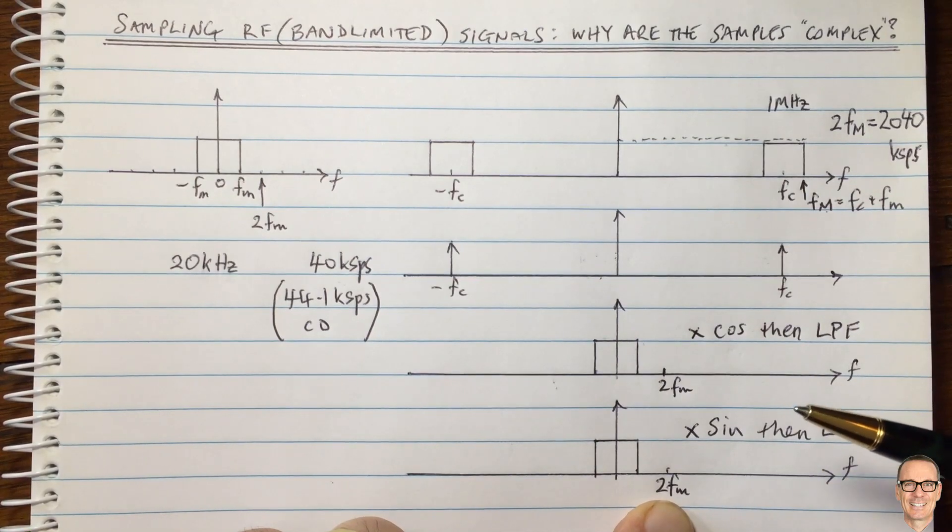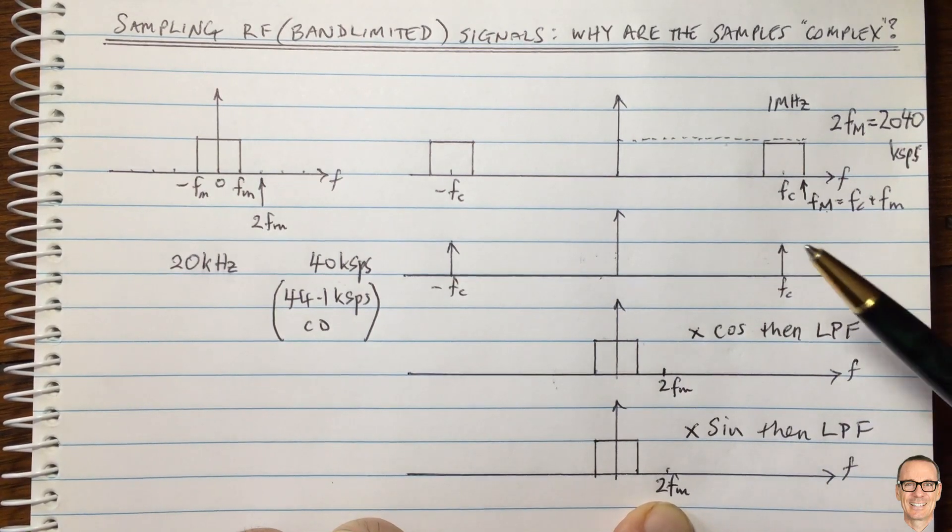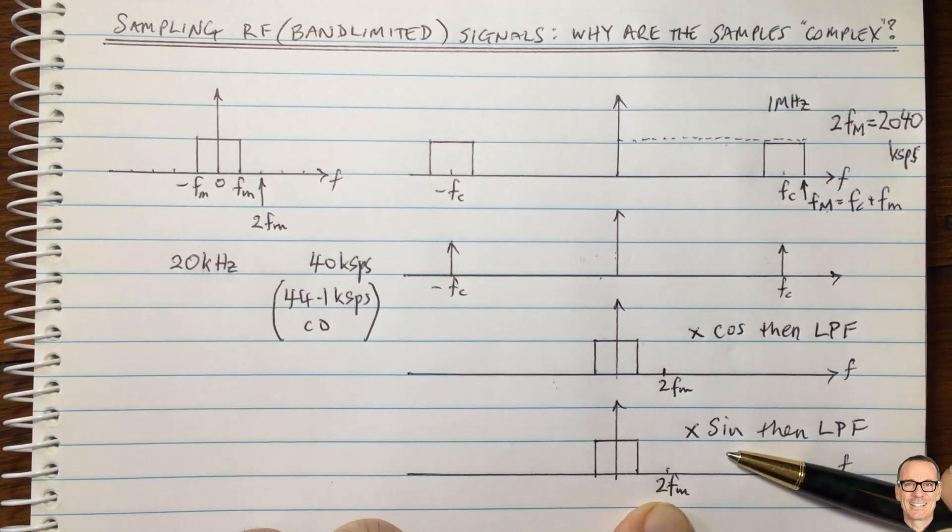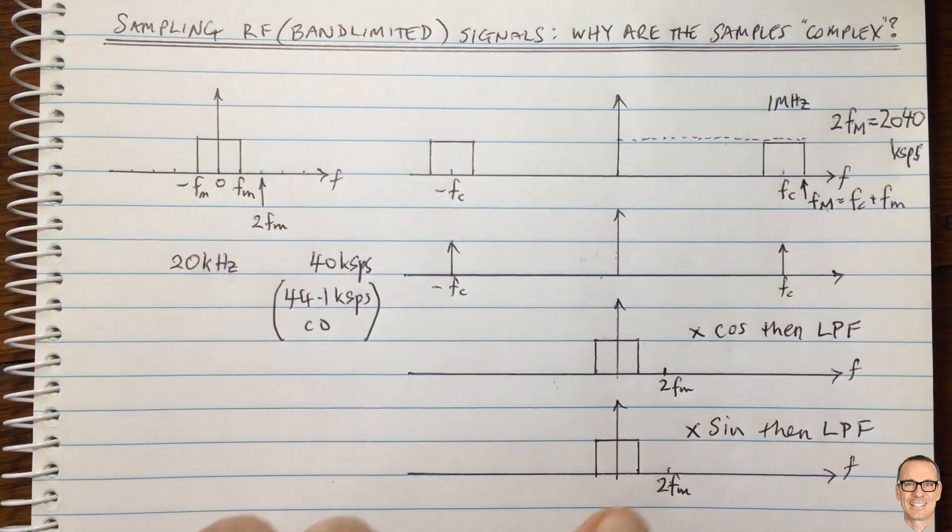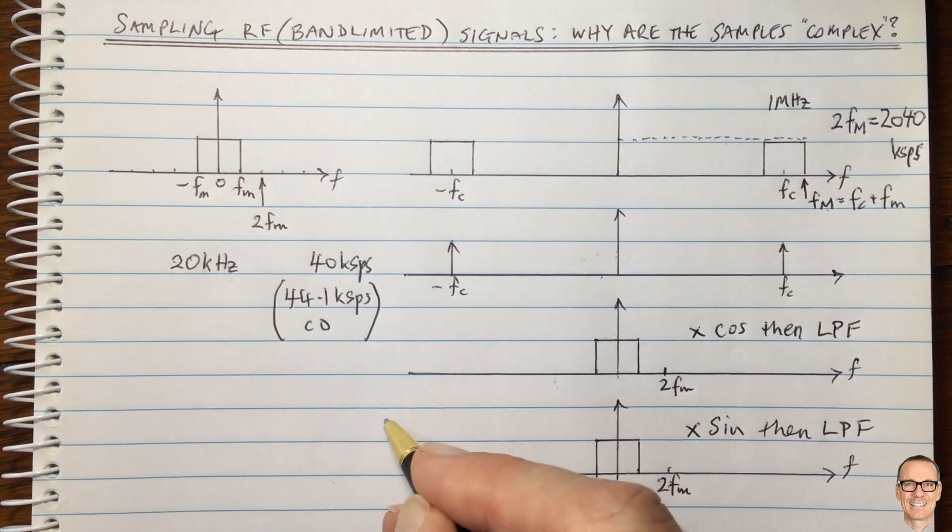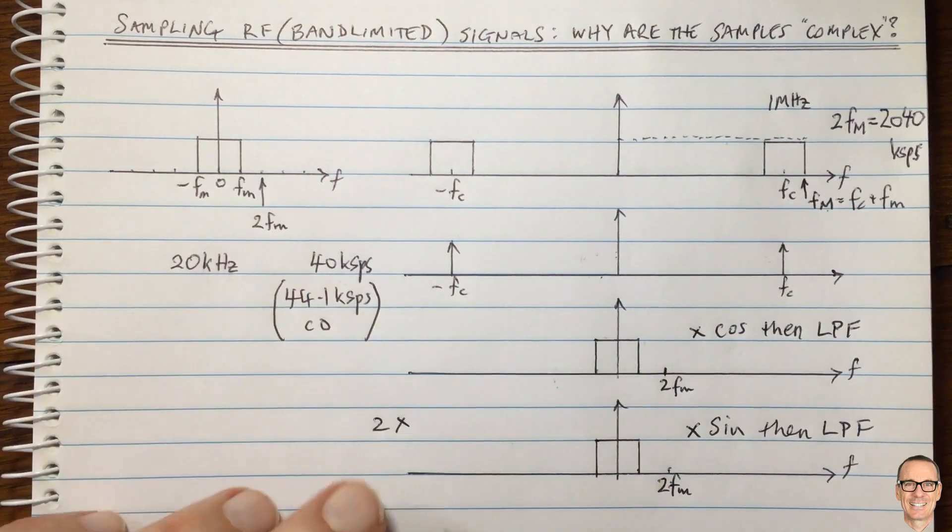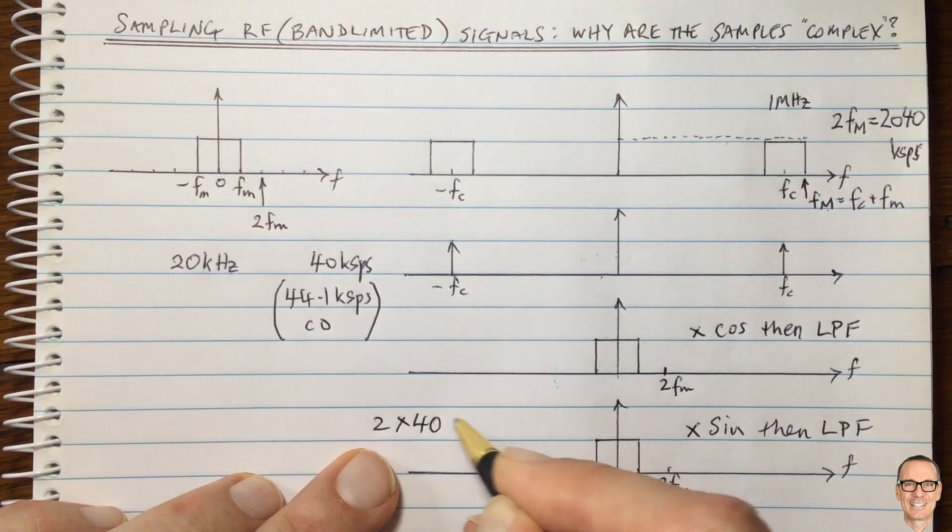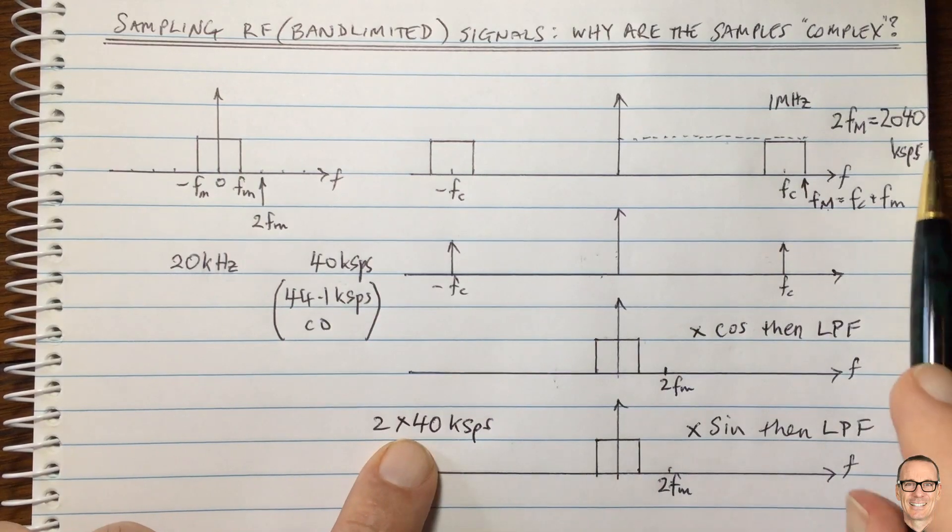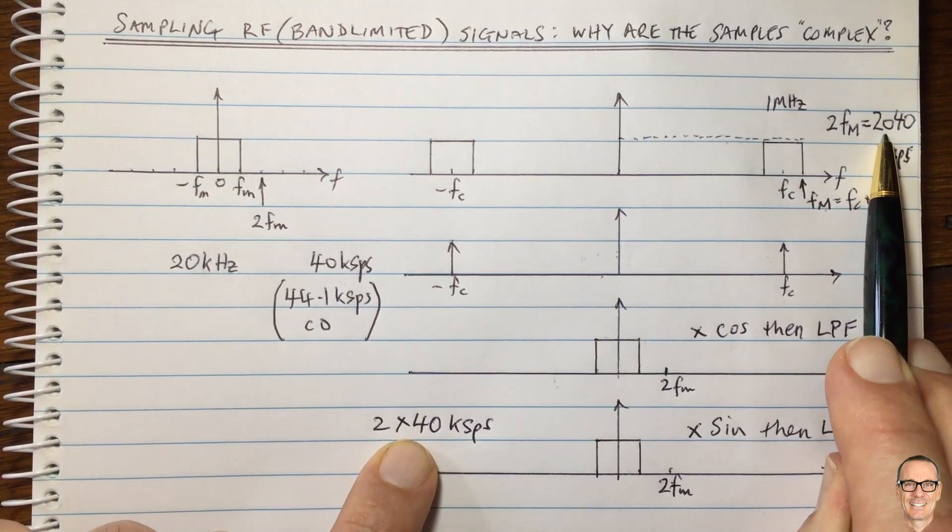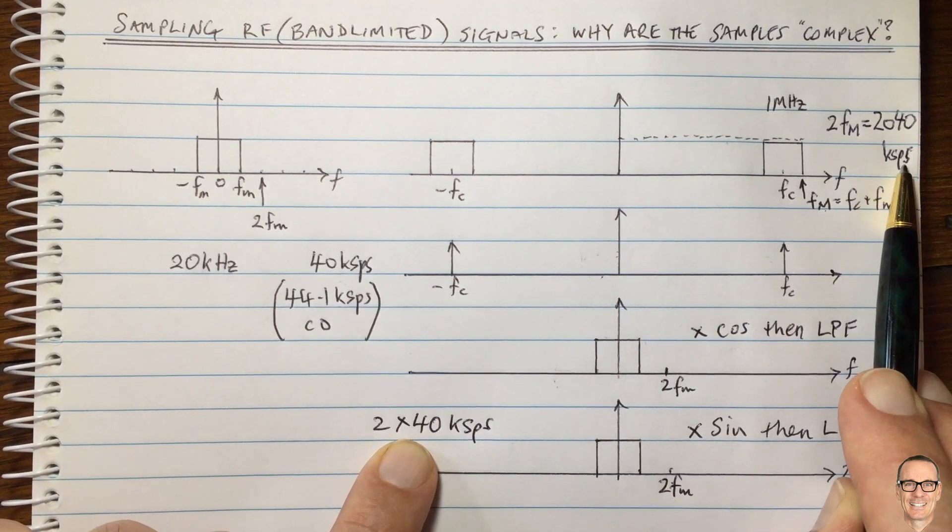We can do it for both of them though now. And therefore we either have twice the number of samples and they are real valued samples, or we could represent them as the same number of complex valued samples. And that's coming back to this question up here.